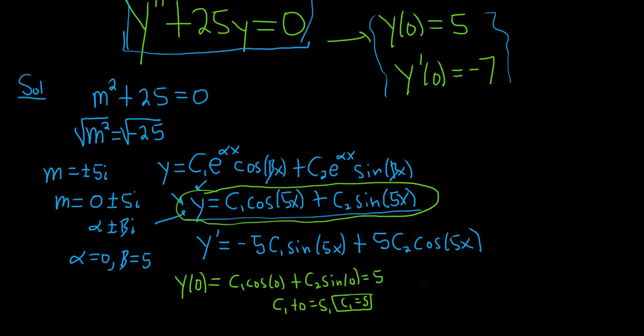Now let's use the other condition: y'(0) equals negative 7. Plugging in 0, we get negative 5c₁sin(0) plus 5c₂cos(0), which equals negative 7.